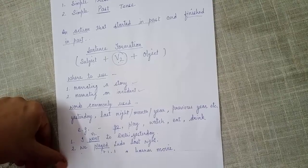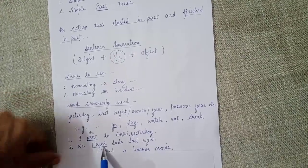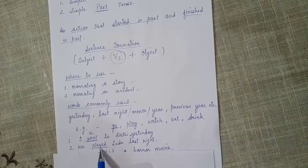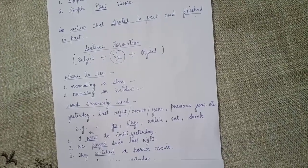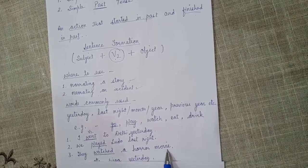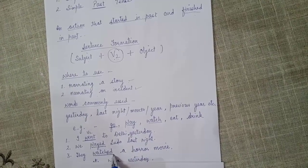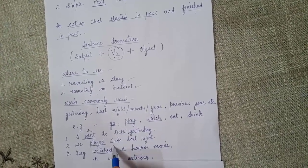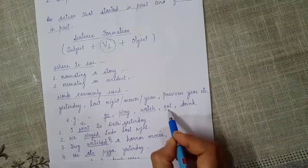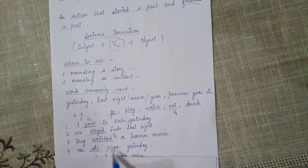Next verb is play. Play is the first form of the verb and here we are going to use it in past form. For example: We played Ludo last night. Then the next sentence: They watched a horror movie. Watch is the first form and by putting -ed after it, it becomes the second form of the verb. Then we have the verb eat. This is the first form and its past form is ate. He ate pizza yesterday.